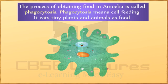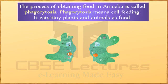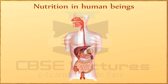Fifth, egestion — when a considerable amount of undigested food collects inside the amoeba, its cell membrane ruptures suddenly at any place and the undigested food is thrown out of the body.